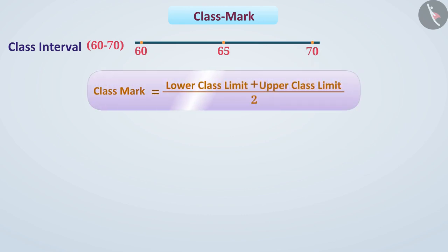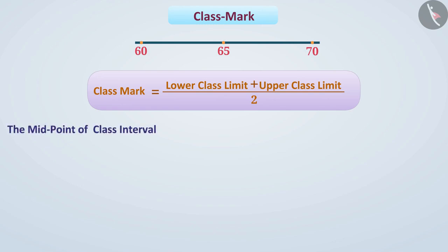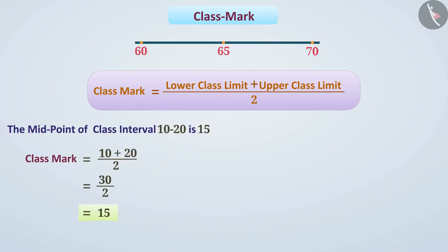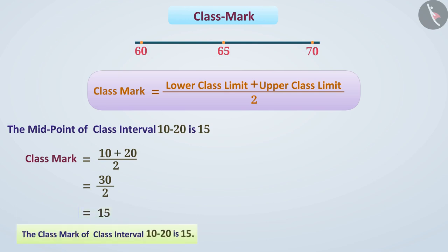For example, the midpoint of a class interval 10 to 20 is 15. That means the class mark of a class interval 10 to 20 is 15.